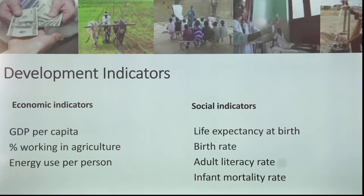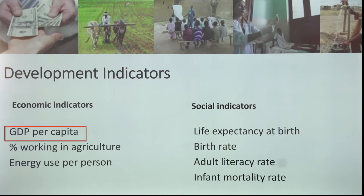These indicators can be economic or social. You need to be able to explain two or three economic and two or three social indicators of development. One example of an economic indicator is gross domestic product per capita — the total value of goods and services produced by a country divided by the number of people in the country. You could think of GDP per capita as roughly the amount of money made by the average person in the country in a year.